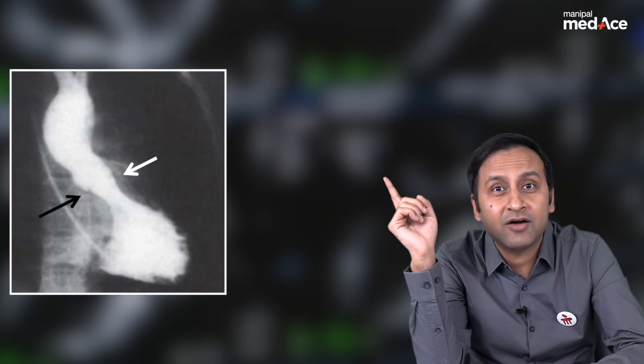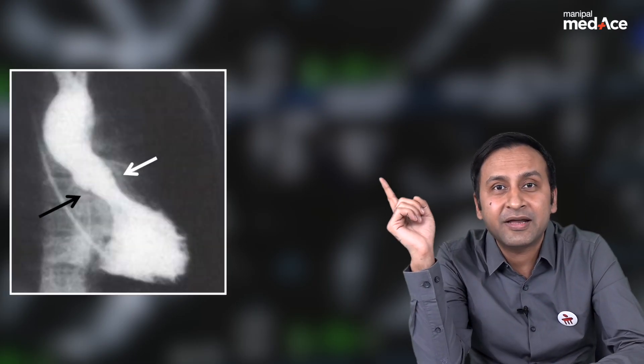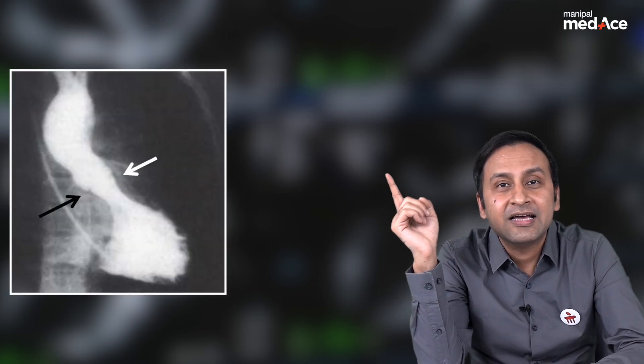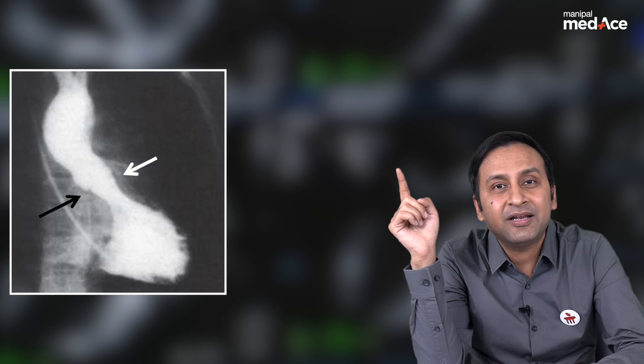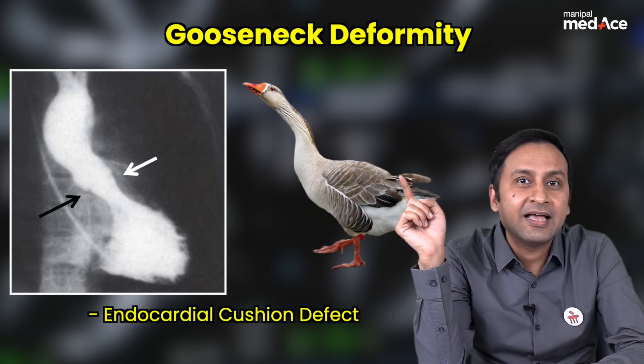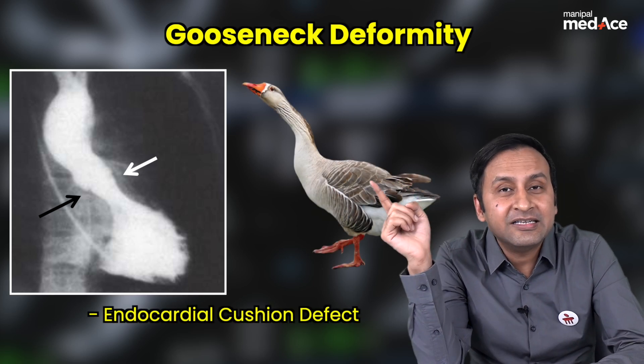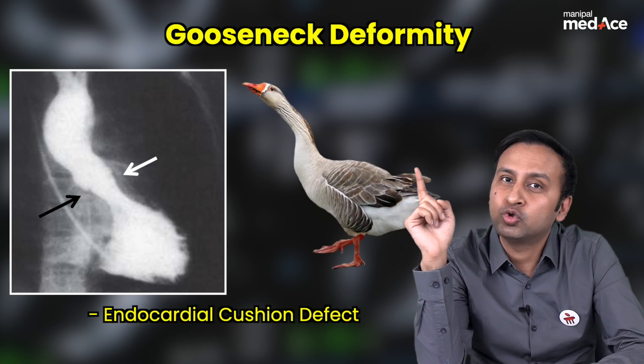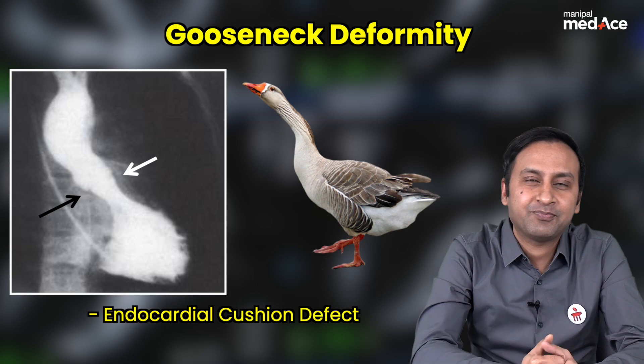Let us have a look at this radiograph. What is this appearance looking like? This appearance is typically looking like a goose neck, and this is typically seen in patients with endocardial cushion defects.